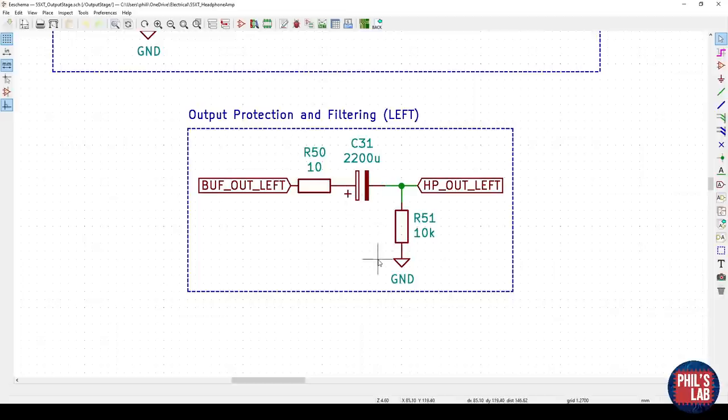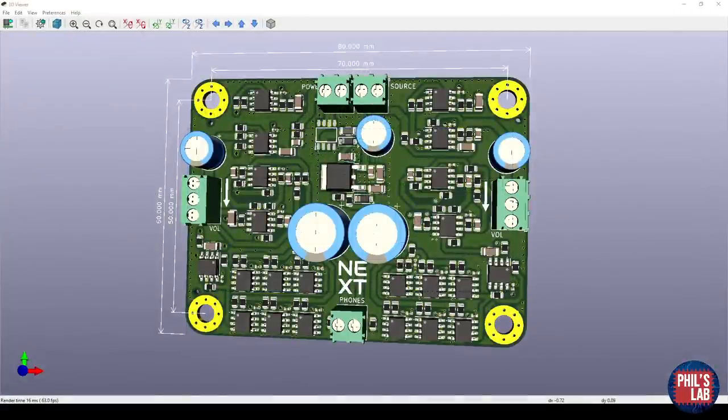The final bleed resistor over here to ground ensures a discharge path for this large capacitor should there be no headphones attached. And that pretty much sums up the schematic, so let's move over to the PCB layout and routing.